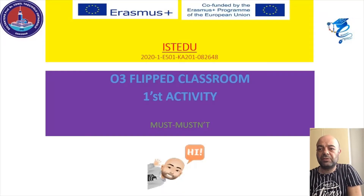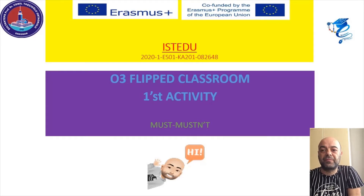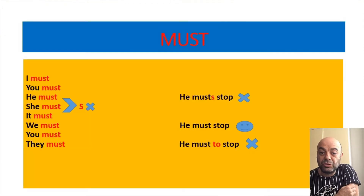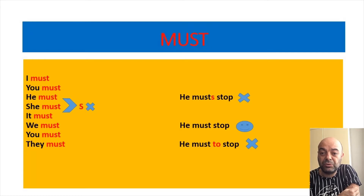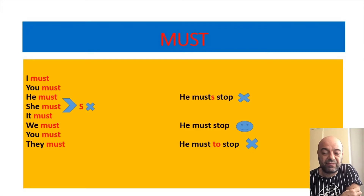Hello students, today's lesson is 'must' and 'mustn't'. Remember that they are modal verbs. Must: I must, you must, he must, she must, it must, we must, you must, they must.